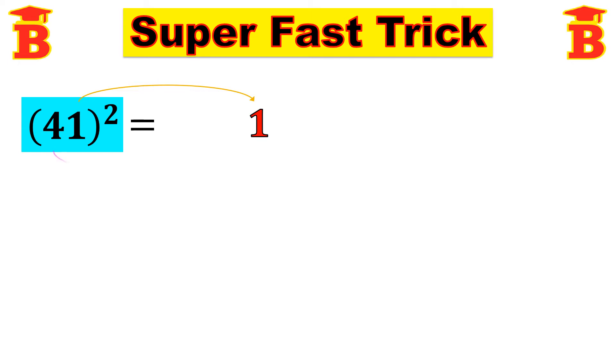Next digit, take this number 4, multiply by 2. So 4 into 2, we can get the next digit 8. And then next step, same number 4, we have to square this. 4 square is 16. That's all. Therefore 41 square is 1681.